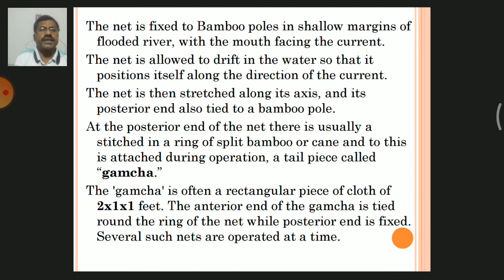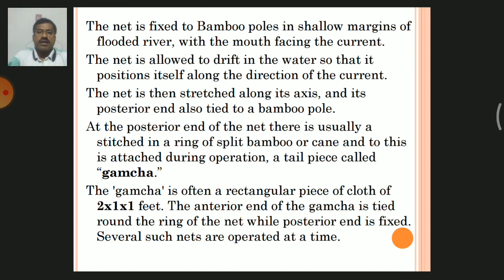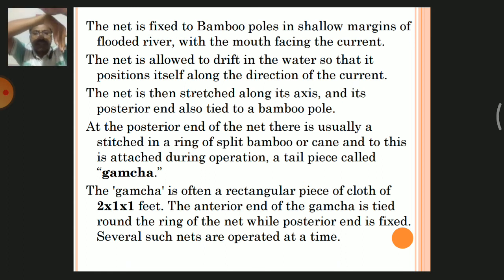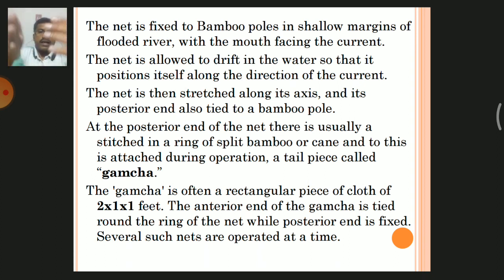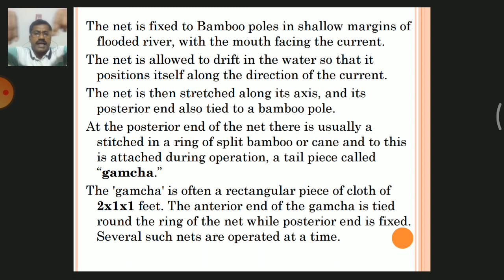The net is fixed to bamboo poles in the shallow margins of flooded rivers, with the mouth facing the current. The net is allowed to drift in the water so that it positions itself along the direction of the water current. The net is then stretched along its axis and its posterior end is also tied to bamboo poles.